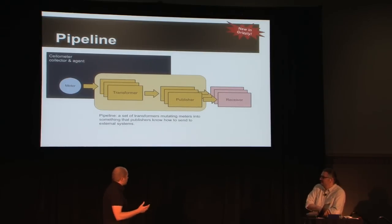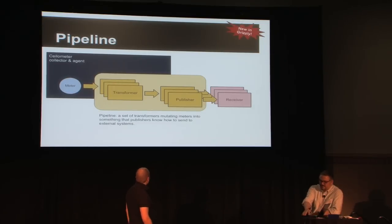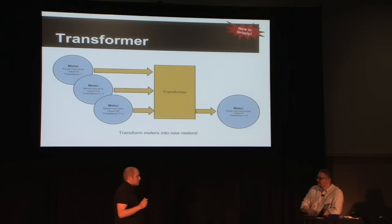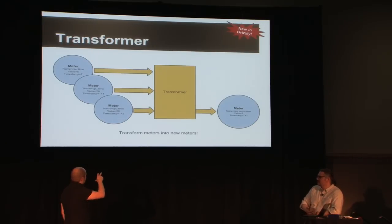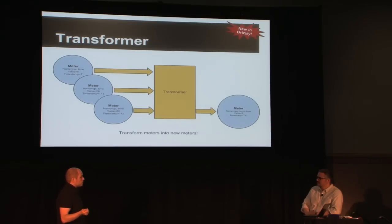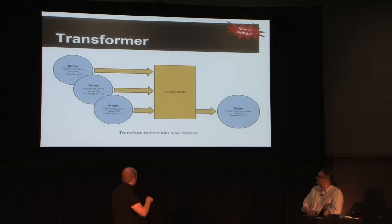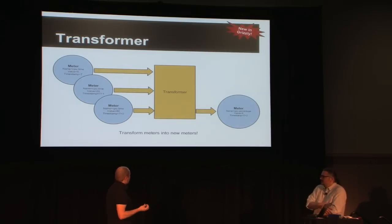The transformer is a handy way to change your meters into something different. For example, when you have a CloudWatch-like system, you're going to get a meter from Nova which is CPU time from an instance — that's cpu.time as a cumulative counter. But your system might not be able to treat this data as-is. Maybe it will want a percentage of CPU core usage. So you're going to be able to use a transformer to transform these meters into a new one which is a percentage and not a cumulative value. Transformers are designed in a very generic way with parameters, so you can configure one transformer to act as you want for your final publisher.